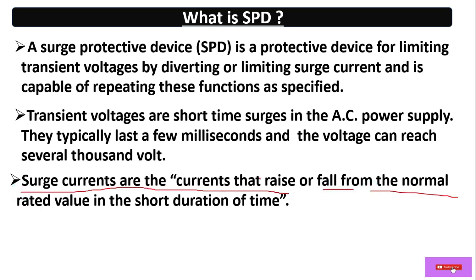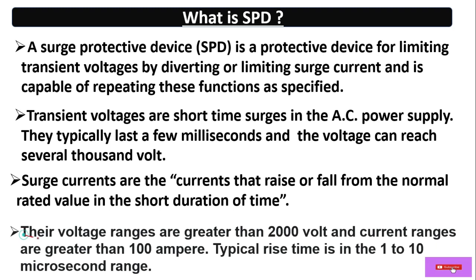Surge currents are currents that rise or fall sharply from the normal rated value in a short time duration. Their voltage range is greater than 2000 volts and current range is more than 100 amperes. This typically lasts only up to 1 to 10 microseconds.